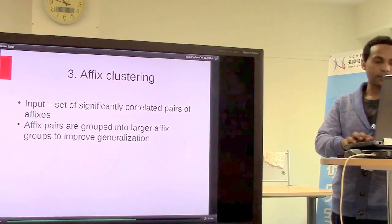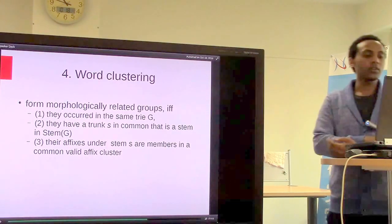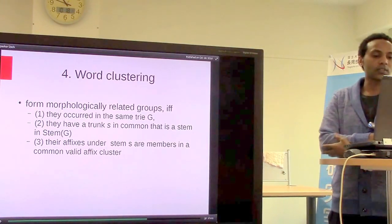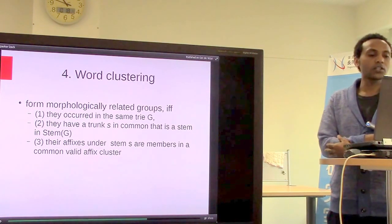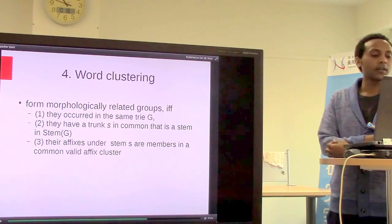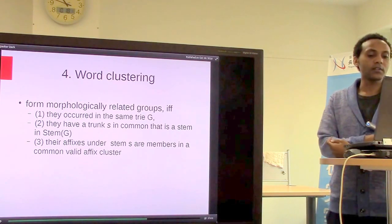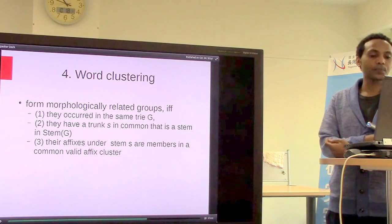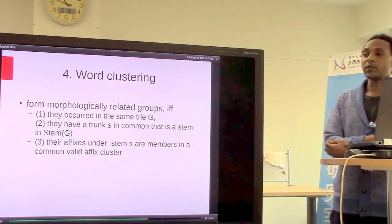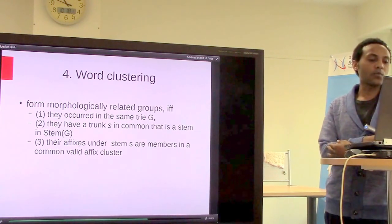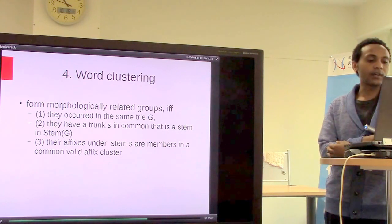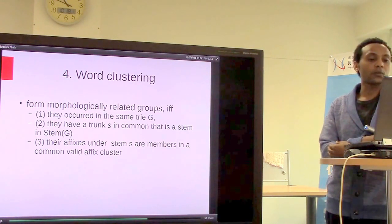After affix clustering comes word clustering, where certain rules are followed. The candidate words should occur on the same trie, and they should have trunks with a common stem. The affixes under the stems should be members of a valid stem cluster. These are the rules used for word clustering.